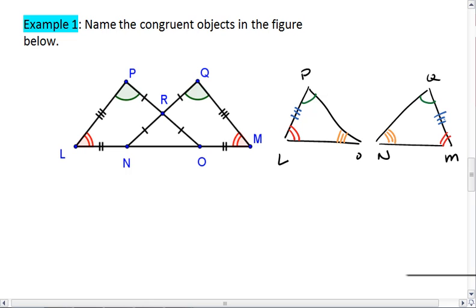We also know that looking at side PO, we're given these two segments. We also have side QN, which is also composed of those two congruent segments. So by segment addition, we know that side PO is congruent to side QN.